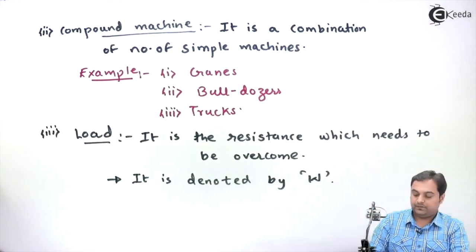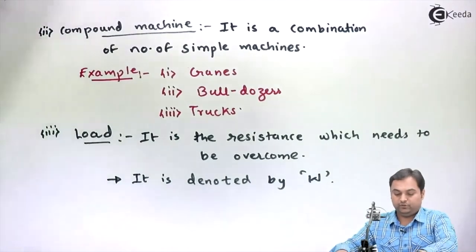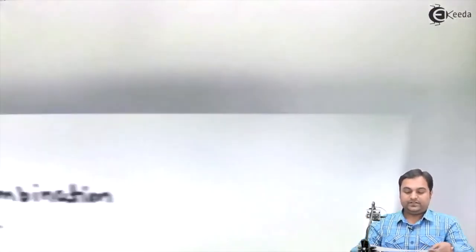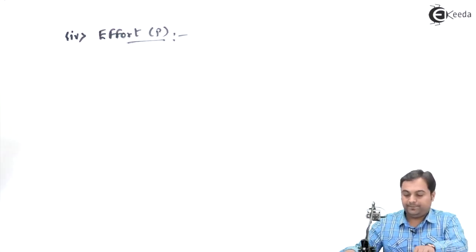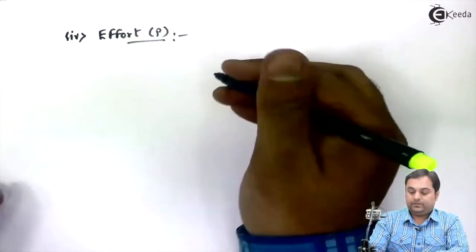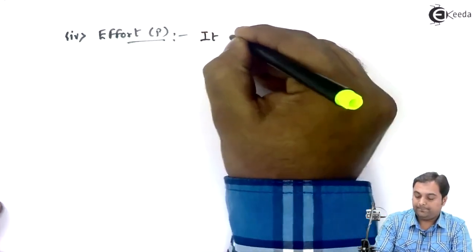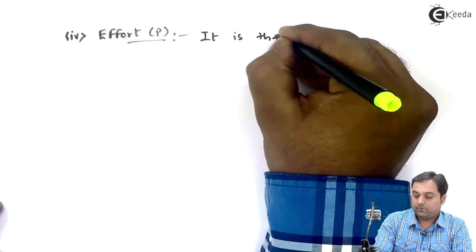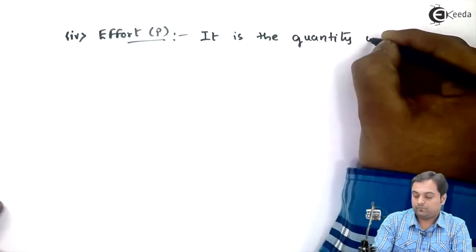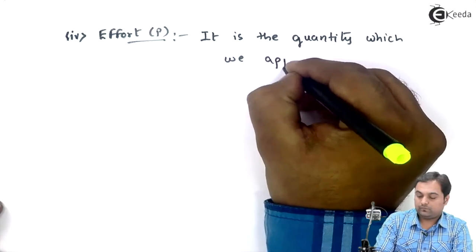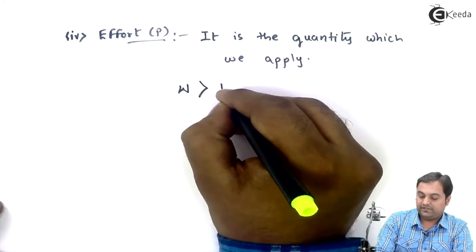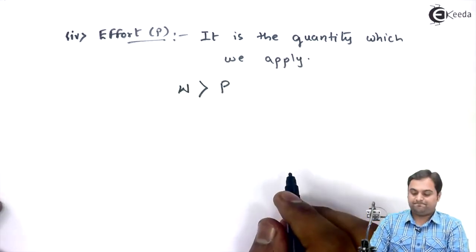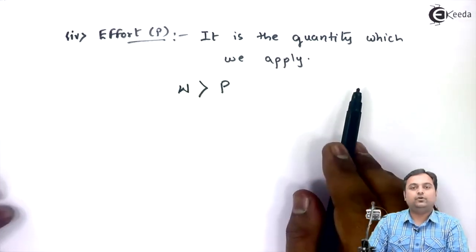Next, Effort. Effort is denoted by letter P, and it is the quantity which we apply. Load will always be greater than effort for a simple machine.